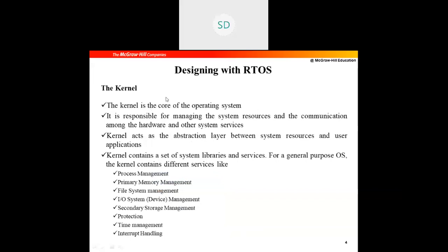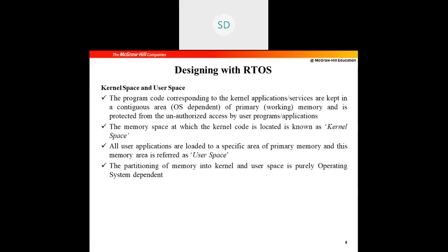The kernel is the core of the operating system. It is responsible for managing system resources and communication among hardware and other system resources — it controls and allocates resources to particular applications. Basically, it acts as an abstraction layer between the system resources and the user application. The kernel provides services such as process management, primary memory management, file system management, I/O or device management, secondary storage management, protection, time management, and inter-process communication.